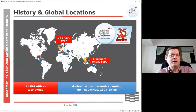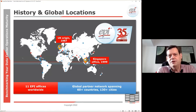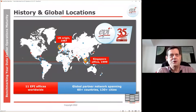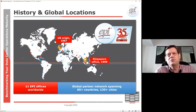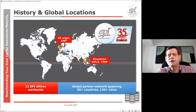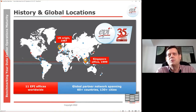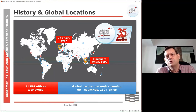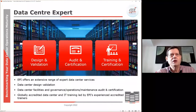A very brief overview of EPI: originally started in the UK in 1987, so we are celebrating our 35th anniversary this year — watch your email because there will be some nice events. We moved headquarters to Singapore in 1999 and from there expanded all over the world, with currently 11 offices covering the whole globe and a large global partner network, with service capabilities in about 60 plus countries.